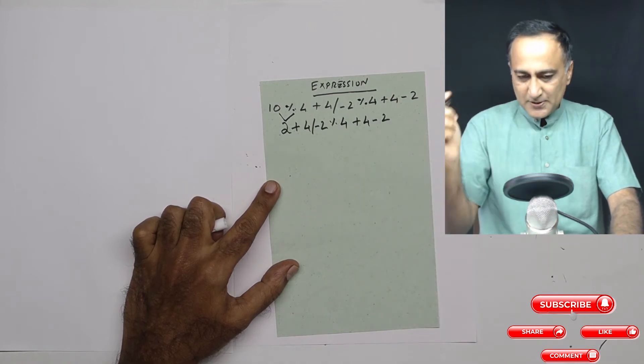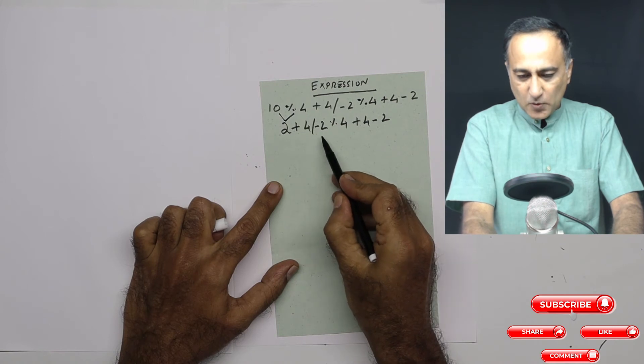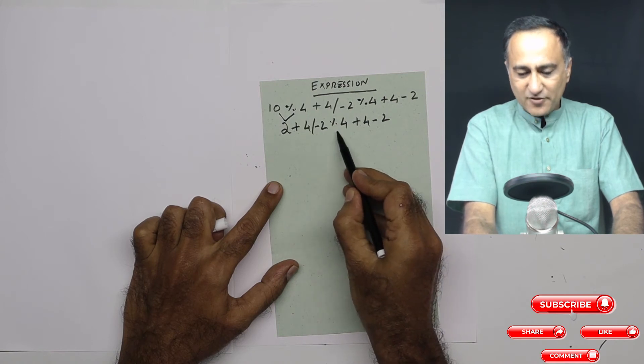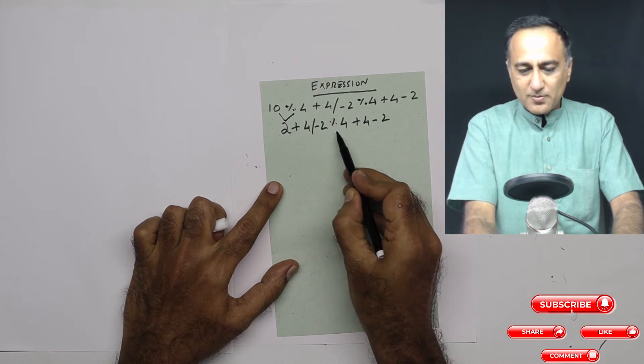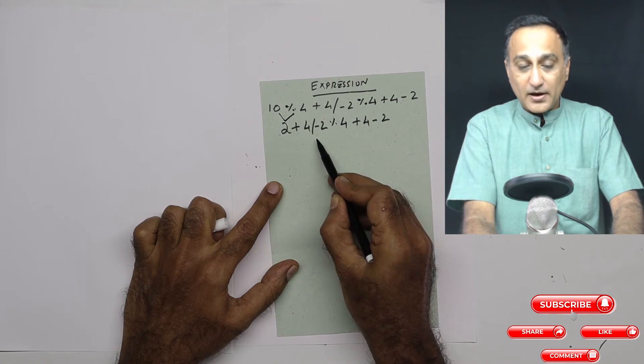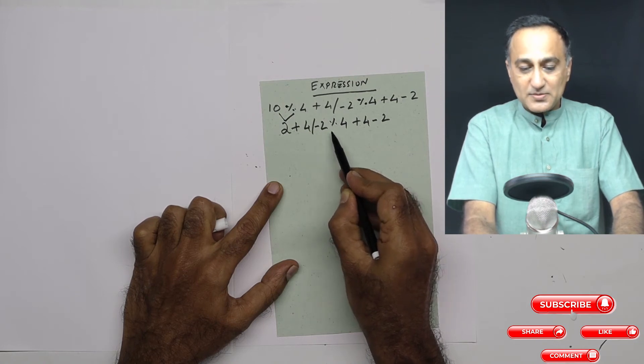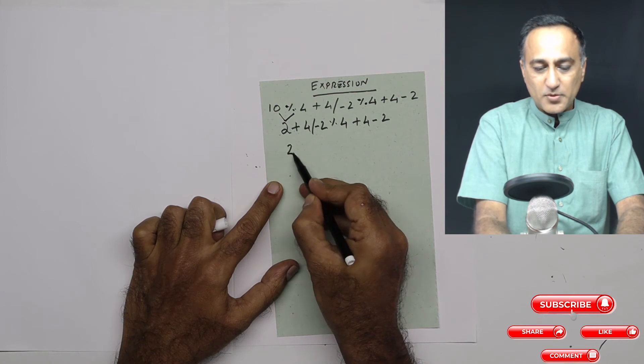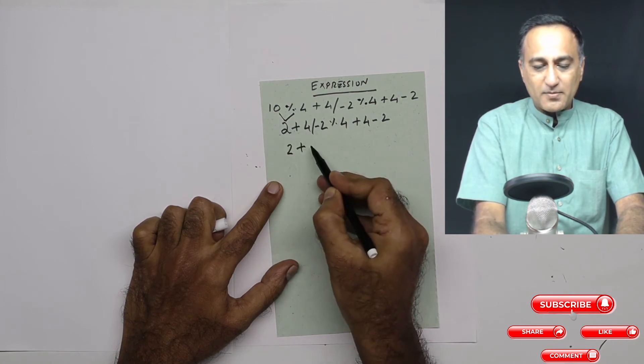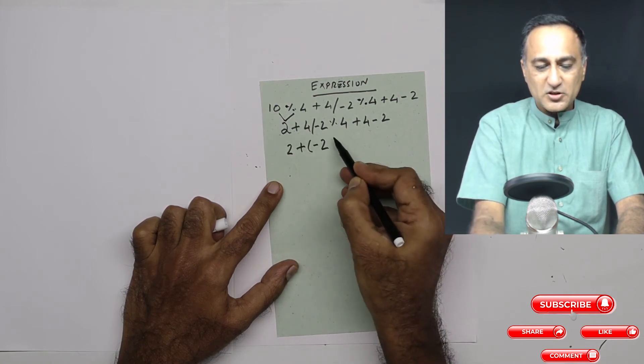Now I'm going to look at the operators again. I have division and I have mod. Among division and mod, division is going to have the highest priority because it comes before mod. So this is going to be 2 plus 4 divided by minus 2, which is going to be minus 2.